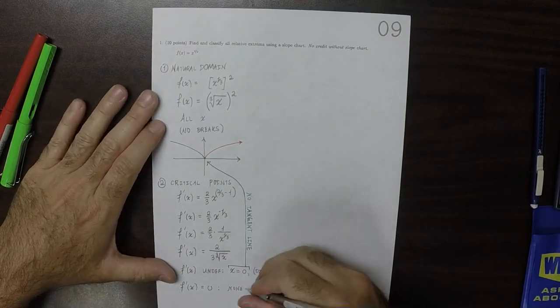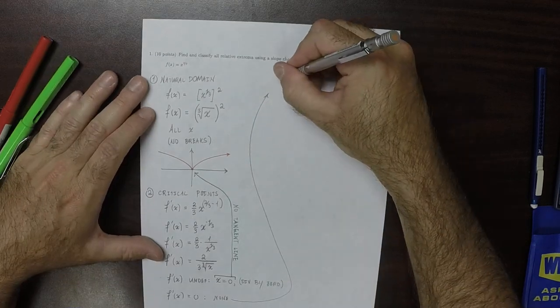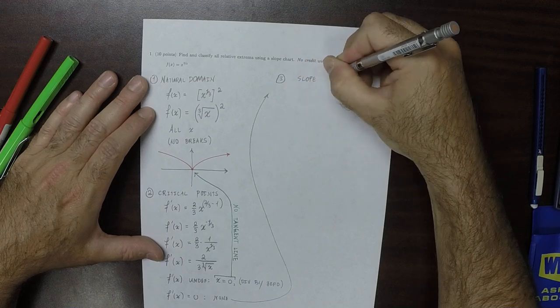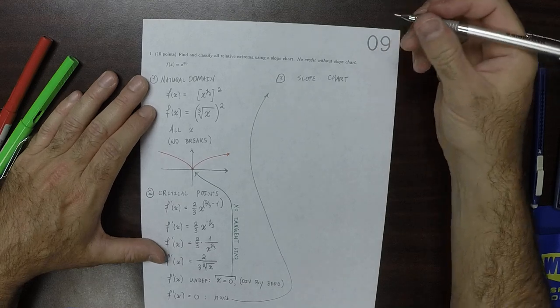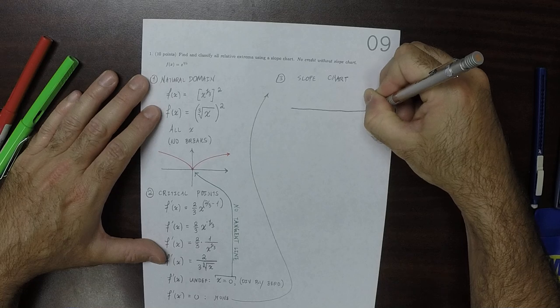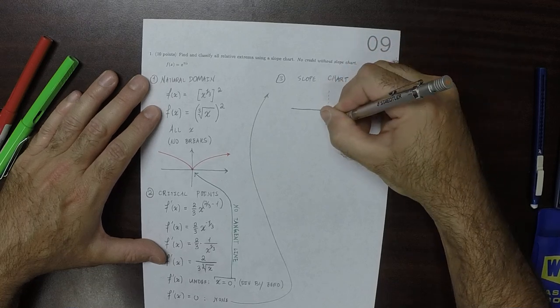Okay. Now we can make the slope chart. Well, the natural domain is all the reals, there's just one fence post at zero.